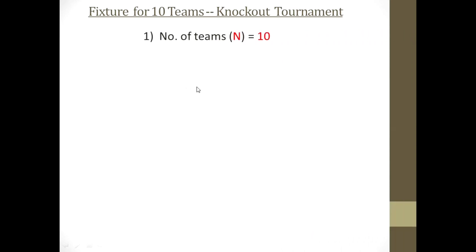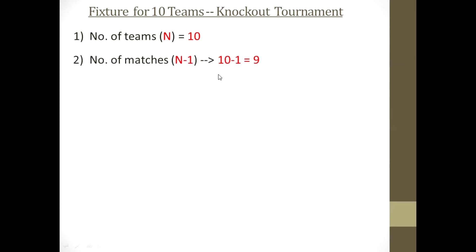Before drawing a fixture for the tournament, you have to remember some points and formulas. We are taking 10 teams for a knockout tournament. The first point is the number of teams, represented as n, where n = 10. The second point is how many matches are going to be played — the formula is n minus 1, that is 10 minus 1 equals 9. So there are 9 matches going to be played in this tournament.